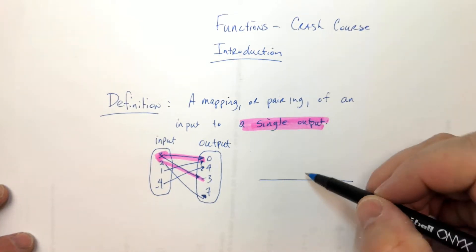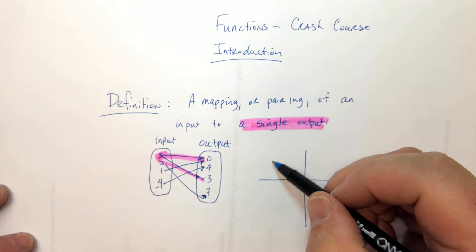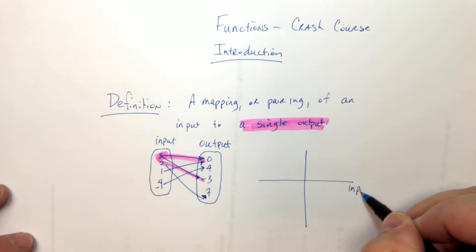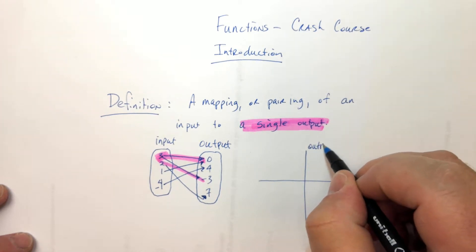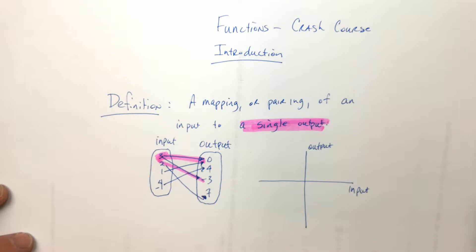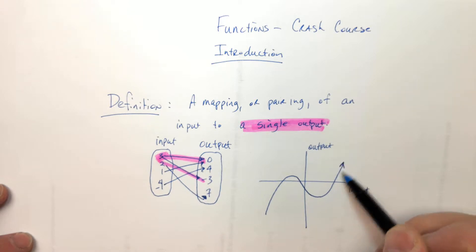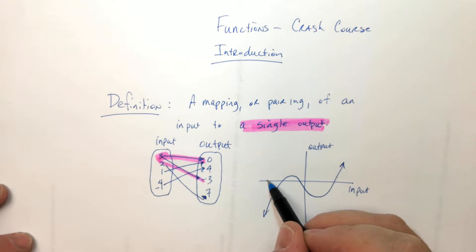Now, on a graph, x is the input and y is the output. So if you had something that looked like this, well that's a fancy-looking curve right there. This would be a function, because all of the values of x, like this value of x, only has one value of y. Do you see what I mean?